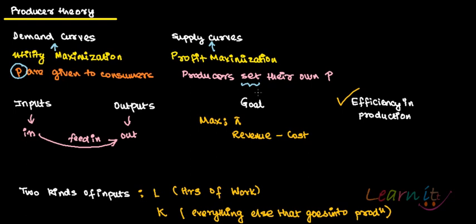Though in perfect competition, even producers are given their prices and they cannot charge a higher or lower price — they're given the price. But in general, producers can set their own price, and this gives them power over their own product.